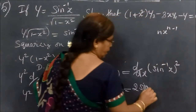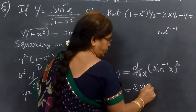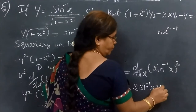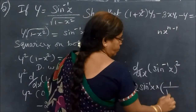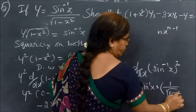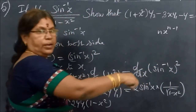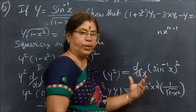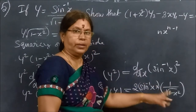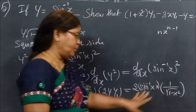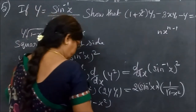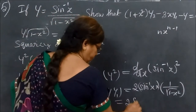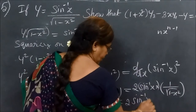You get 2 into sin inverse X into d by dX of sin inverse X, which by formula is 1 by root of 1 minus X square. So the answer simplifies: the 2 cancels, and it equals sin inverse X.